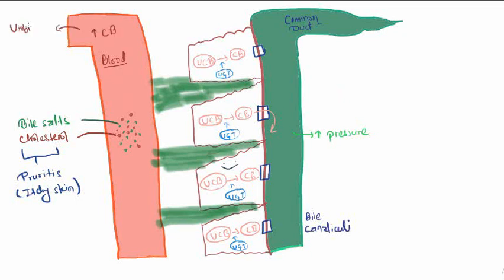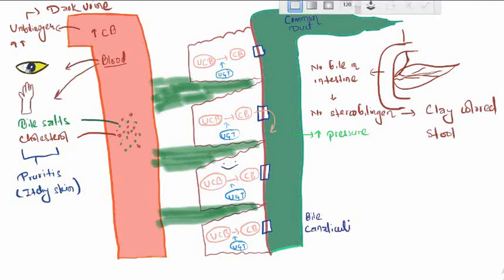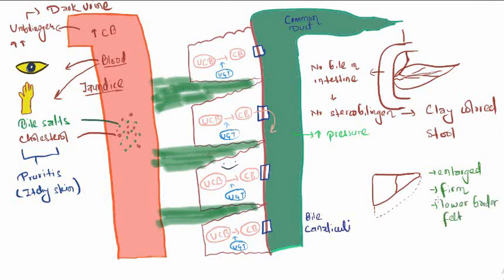Increased conjugated bilirubin results in increased urobilinogen in urine, causing dark urine. As there is atresia, bile cannot reach the duodenum, so there is no bile in the intestine and no stercobilinogen, resulting in clay-colored stool. There is jaundice due to hyperbilirubinemia, especially conjugated bilirubin. The liver is enlarged, firm, and the lower border can be felt due to cirrhosis. This is rare and occurs after some months.